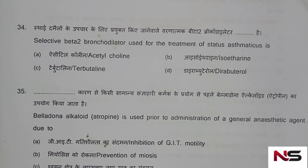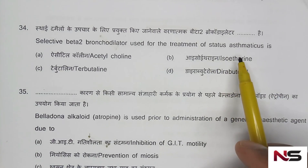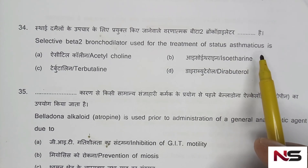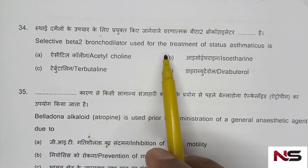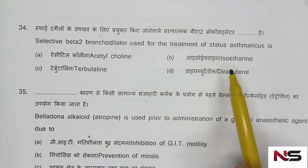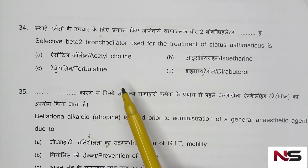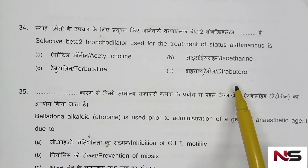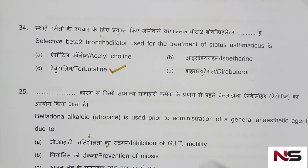Question 34: Selective beta-2 bronchodilator used for the treatment of status asthmaticus. Options are: acetylcholine, isoprenaline, terbutaline, salbutamol. The correct answer is option C — terbutaline.